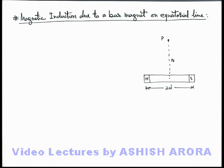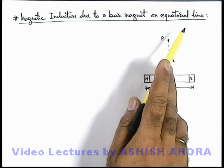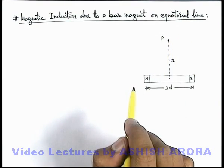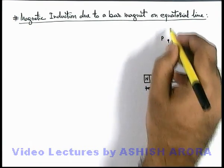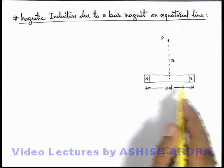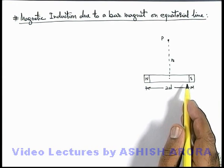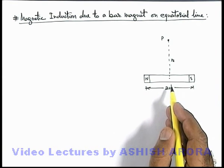Let's study the magnetic induction due to a bar magnet on equatorial line. The equatorial line is the line along the perpendicular bisector of a bar magnet, similar to what we have studied in electrostatics.